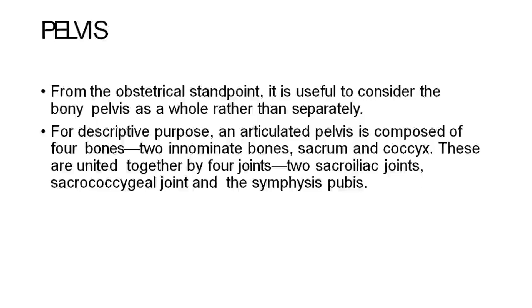Pelvis: From the obstetrical standpoint, it is useful to consider the bony pelvis as a whole rather than separately. For descriptive purposes, an articulated pelvis is composed of four bones: two innominate bones, sacrum, and coccyx. These are united together by four joints — two sacroiliac joints, sacrococcygeal joint, and symphysis pubis.